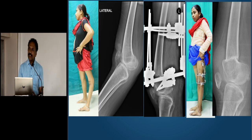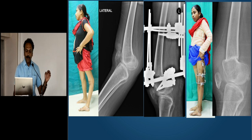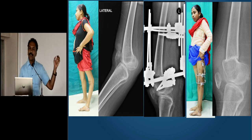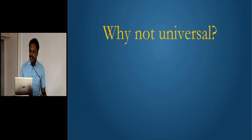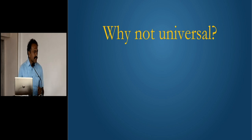What about recurvatum — the most disabling deformity? We translate the distal fragment anteriorly. This is rule two: the deformity is present in the joint, but the osteotomy is performed at the suprapatellar level. Therefore there is some necessary translation. So then why is the Elizarov not universal? Because a lot of us don't know how to prevent knee stiffness.